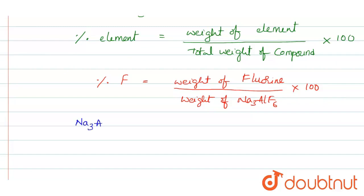Na3AlF6, that is three moments of sodium into 23 plus aluminium 1 into 27 plus fluorine 6 into 19.